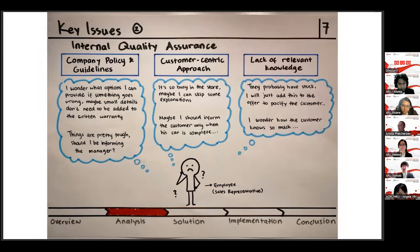Another key issue is internal quality assurance. From the case, it seemed like Paul was the only victim. However, let's take a step back and look from David's point of view. For the company policy and guidelines, did David clearly understand the company policy and guidelines? Did he know when to notify the manager? As for the customer-centric approach, was David overwhelmed or were there other unknown factors which affected his customer service? Lastly, the lack of relevant knowledge.